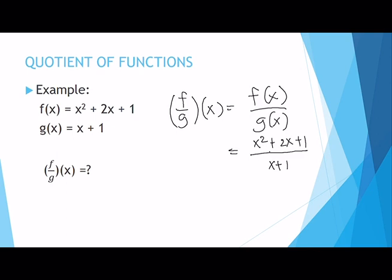Looking at the numerator, we have a trinomial — specifically a perfect square trinomial. We call it a perfect square trinomial because the constant term is a perfect square. To verify, we multiply the square root of the first term by the square root of the third term, then multiply that product by 2. If the result matches the middle term, then we have a perfect square trinomial.